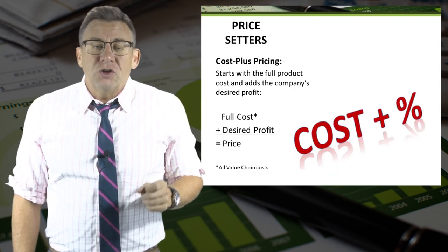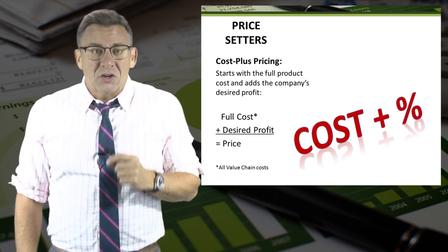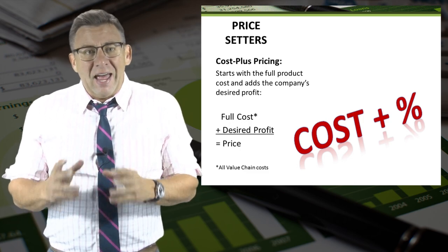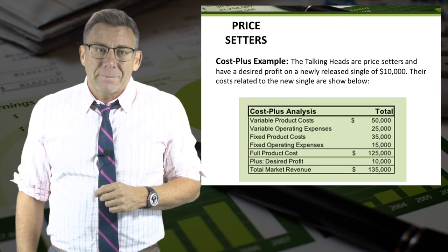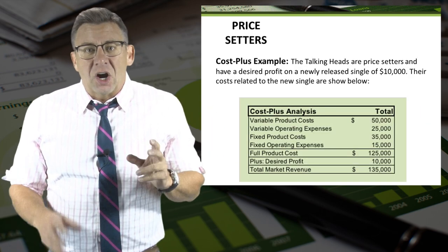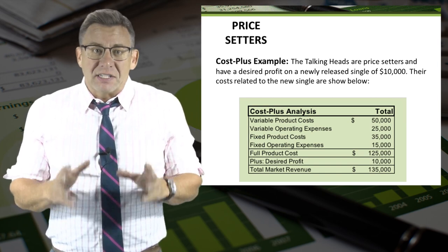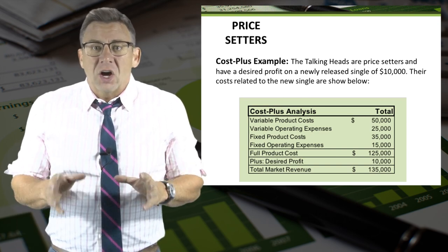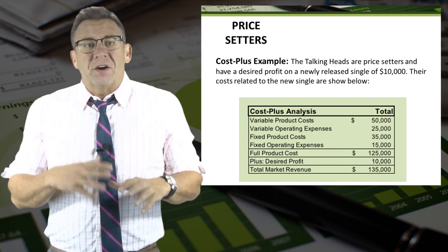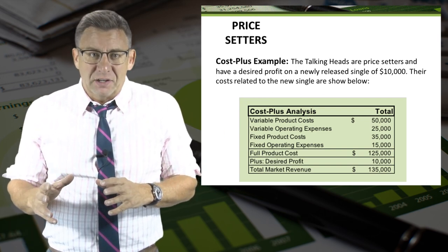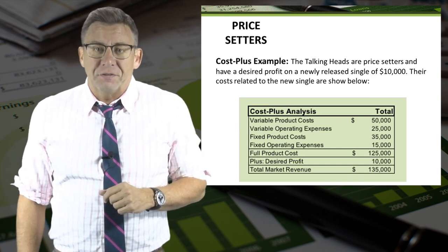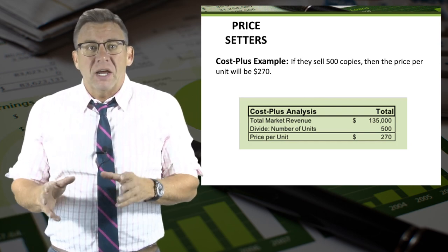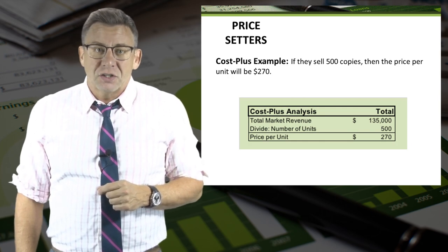Price setters use cost plus pricing rather than target costing. Cost plus pricing starts with the full product cost and adds the desired profit. Let's look at this example: the Talking Heads are price setters and have a desired profit on a newly released single of $10,000. Their costs related to the single are shown on the slide. With their full product cost and desired profit, they want to earn a total revenue of $135,000. If they intend to sell 500 copies, then the cost plus price is $270 per unit.